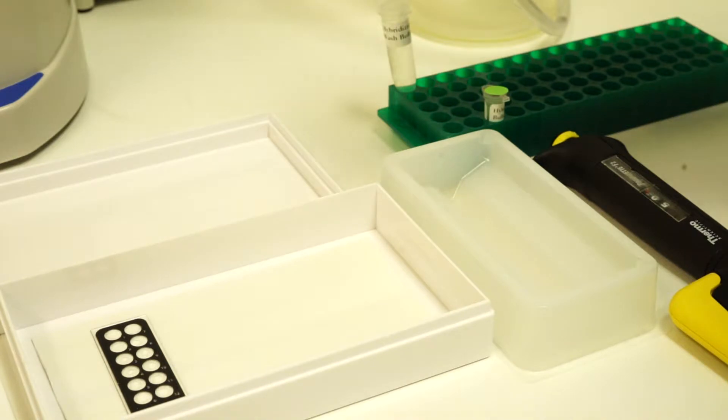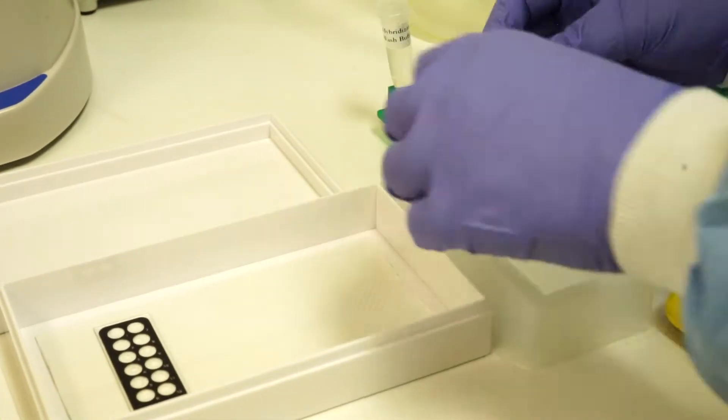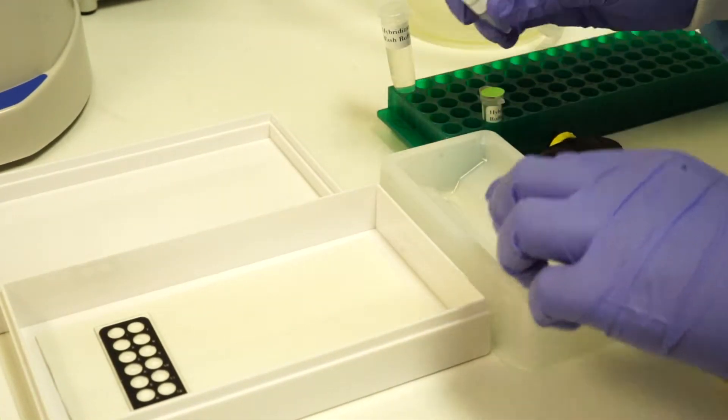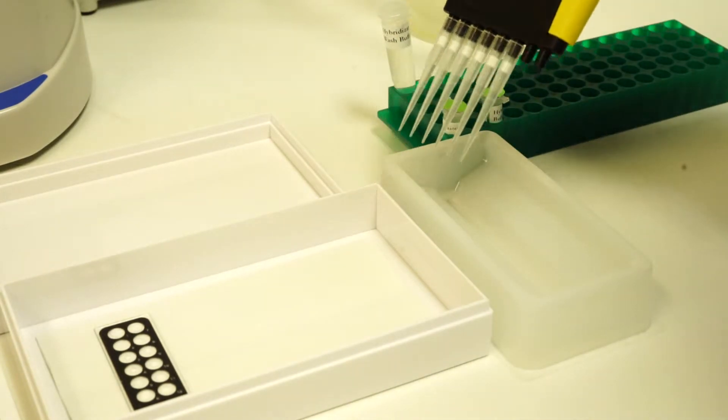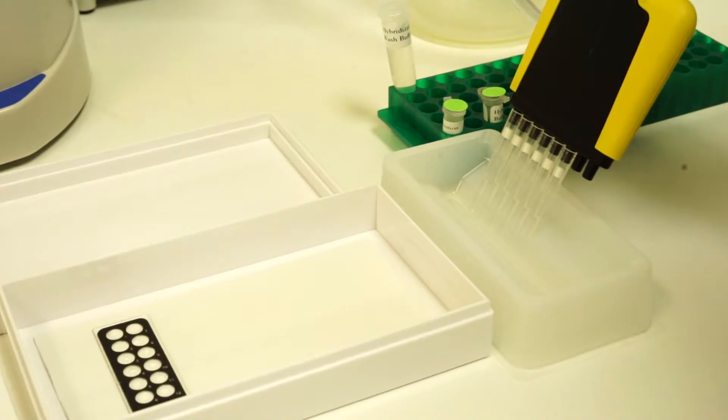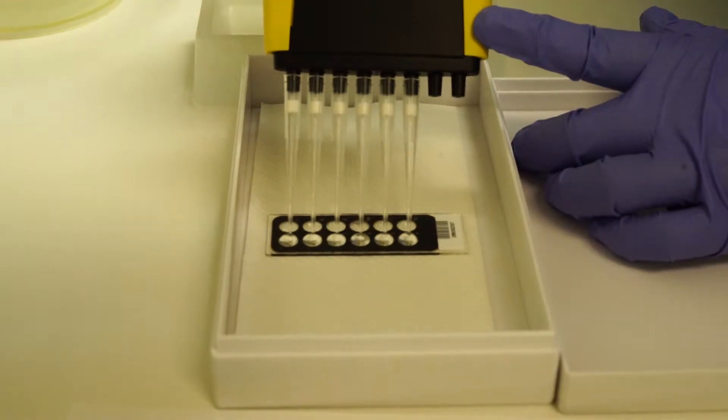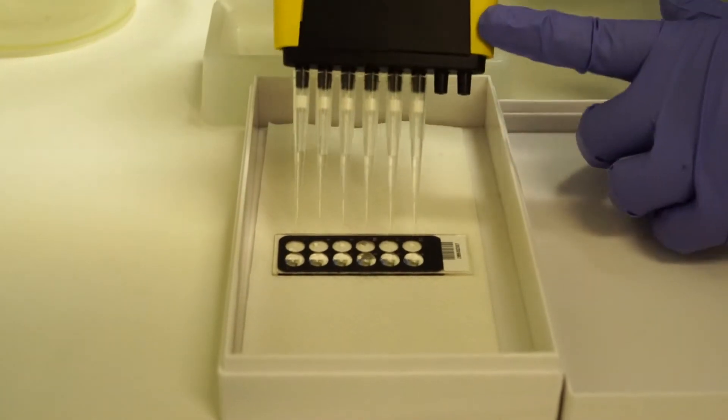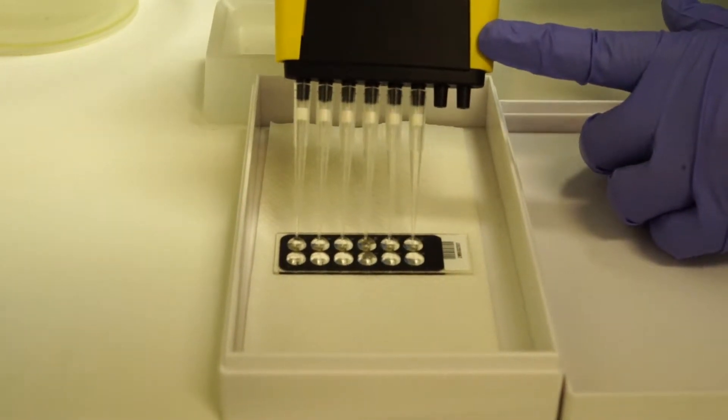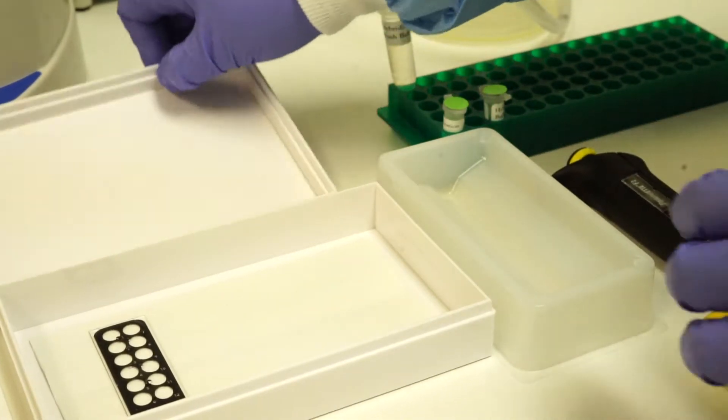After you have mixed your pre-hybridization buffer by vortexing, pour it into a new, clean pipette basin. Set your pipette to 50 microliters and carefully dispense into each of the wells. Allow this to sit for five minutes at room temperature.